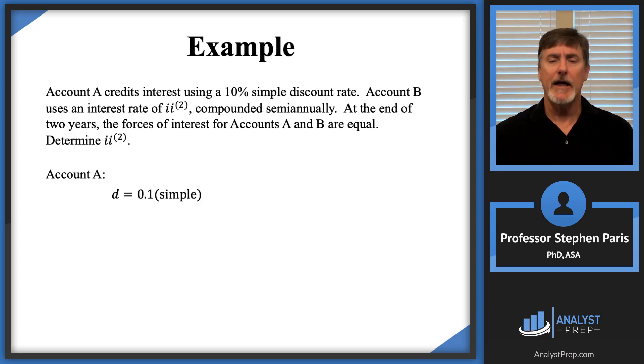So for account A, I've got a simple discount rate of 10%. So D is 0.1 simple. If I know the fact, I can go directly to what the force of interest is when I'm given a simple discount rate. So if D is a simple discount rate, the force of interest is D divided by 1 minus D times T. If you know that, go straight to it, plug in 0.1 for D and I get this force of interest at time T.